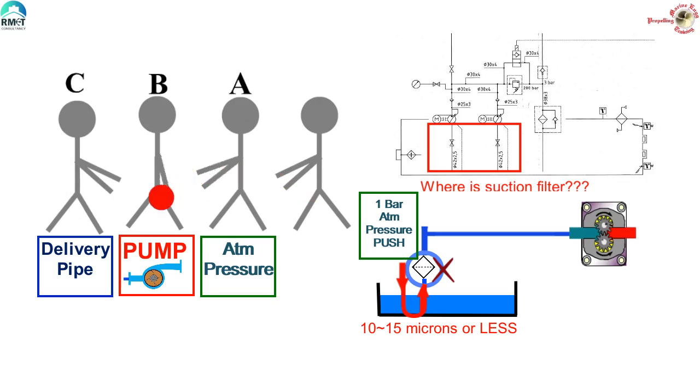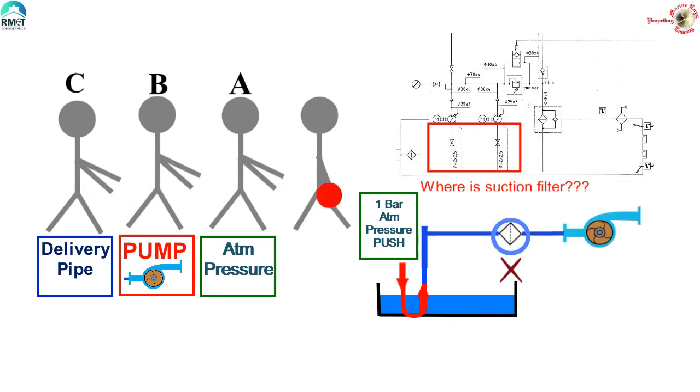So if you use a suction filter of this rating, the atmospheric pressure will struggle to push the fluid to this filter. Similarly, a choked suction filter in the cargo pump will enhance the cavitation, loss of suction due to vapor lock, etc. will happen. A choked sea suction filter will cause cavitation in sea water pump, etc.